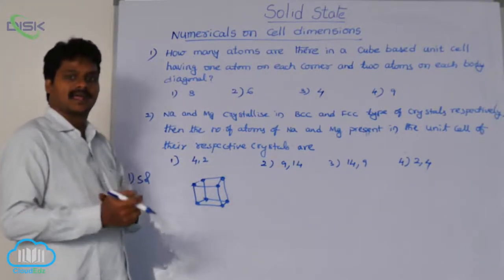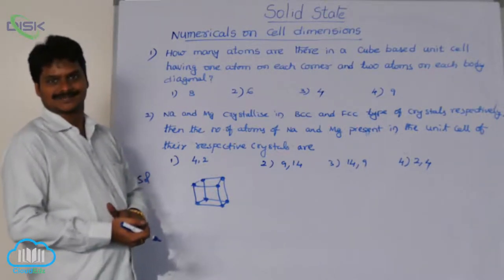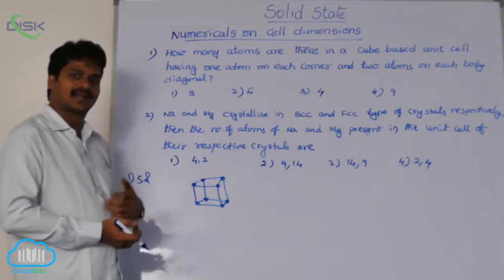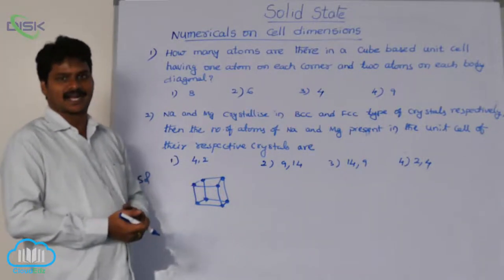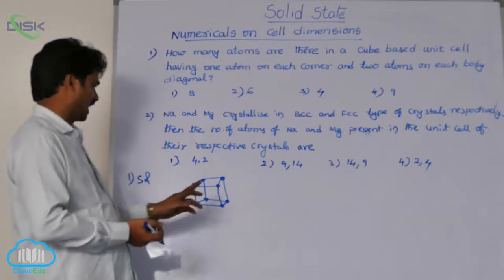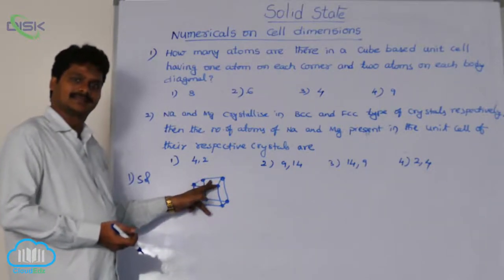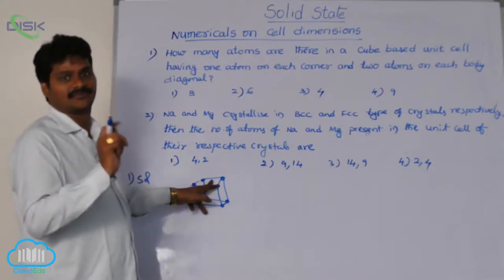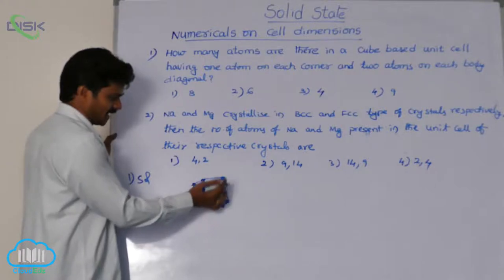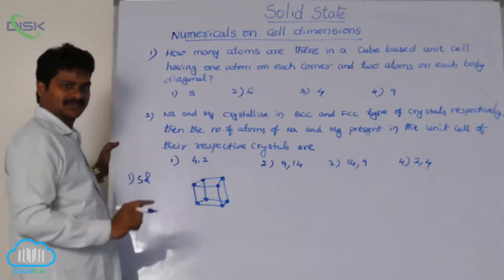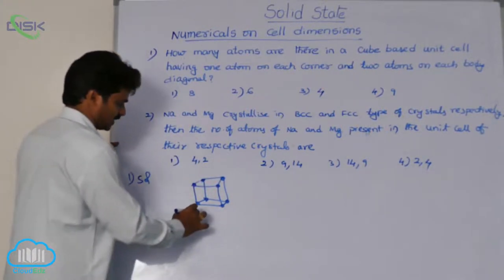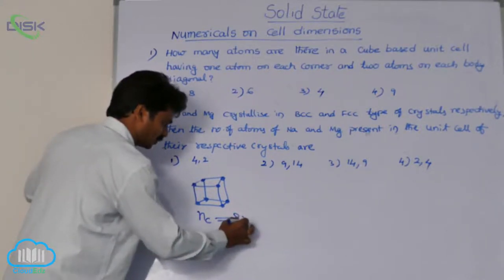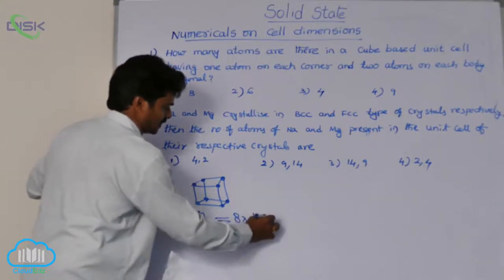Along the body diagonal, two atoms — along the body diagonal means tetrahedral voids. The atom in a tetrahedral void is a complete atom. But the atom at the corner is only 1/8th of an atom. So from these 8 corners, number of atoms from corners equals 8 corners × 1/8, that means 1.